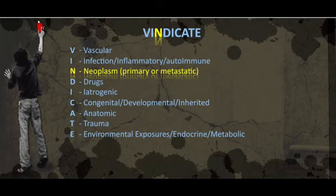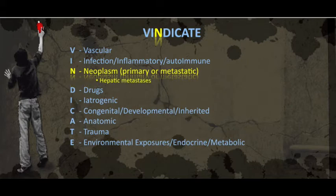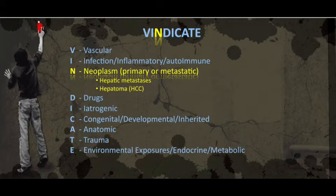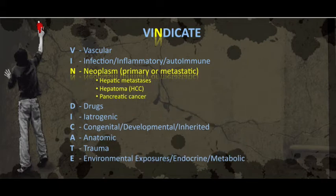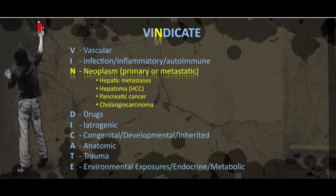N is for neoplasm, both primary and metastatic. Hepatic metastases from the GI tract are by far the most common. Hepatoma, also called hepatocellular carcinoma. Then pancreatic cancer, which causes a post-hepatic obstruction. And finally, cholangiocarcinoma.